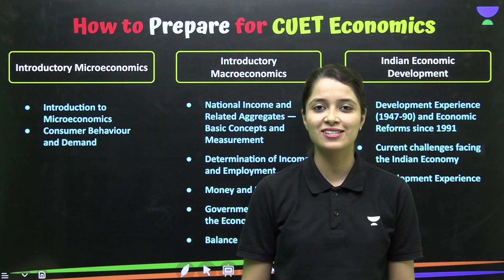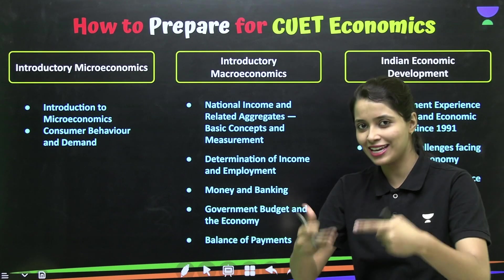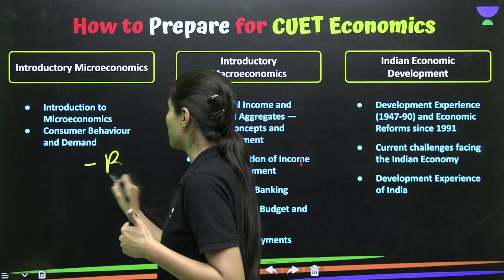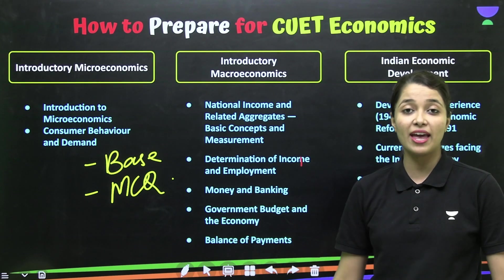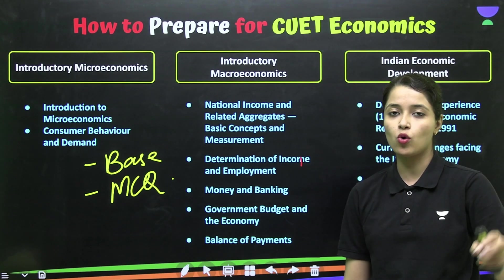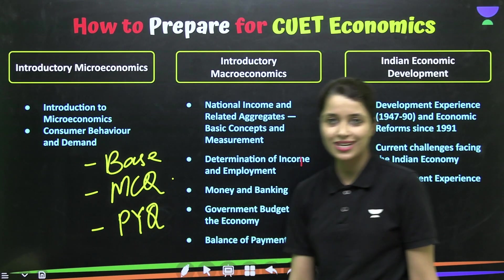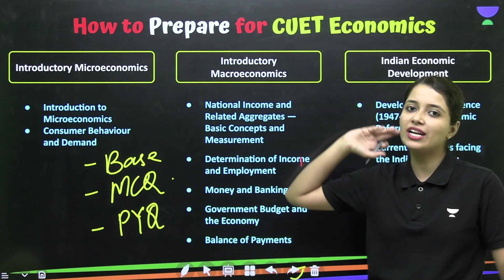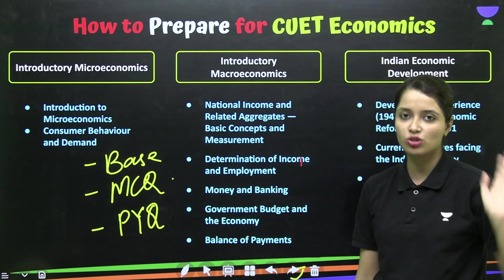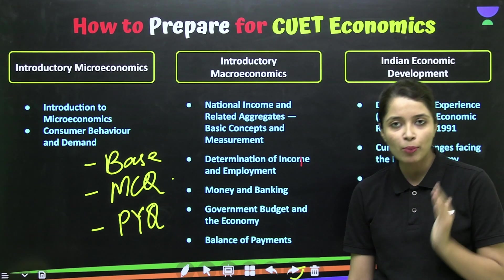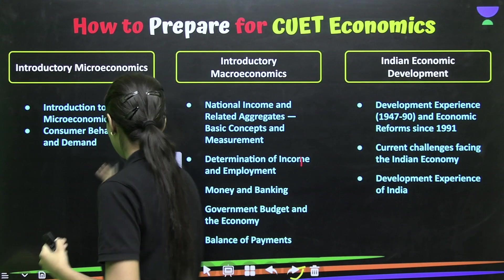Now you will ask, where do MCQs come from? I am here for you and there is a surprise for you as well. The first thing we have done is strengthen our base. The second thing is we have to solve many MCQs — in every chapter, solve as many MCQs as possible. Apart from this, you have to check the PYQs. Since CUET is relatively new, we don't have 20 years of PYQs, but whatever PYQs are available, we have to solve all of them. If you apply this approach, you can crack this exam with very good percentages.